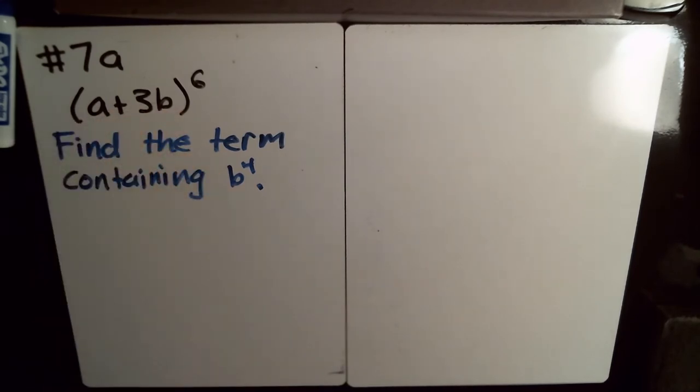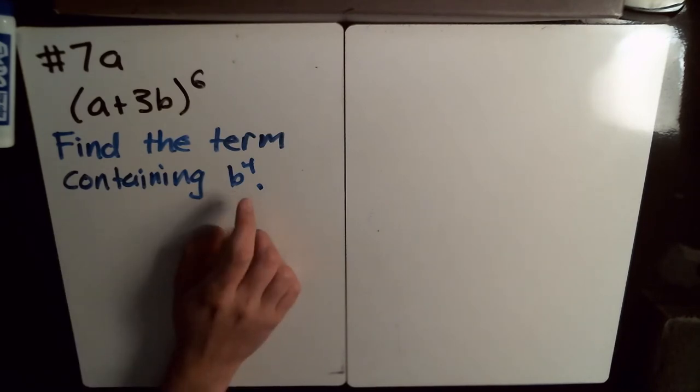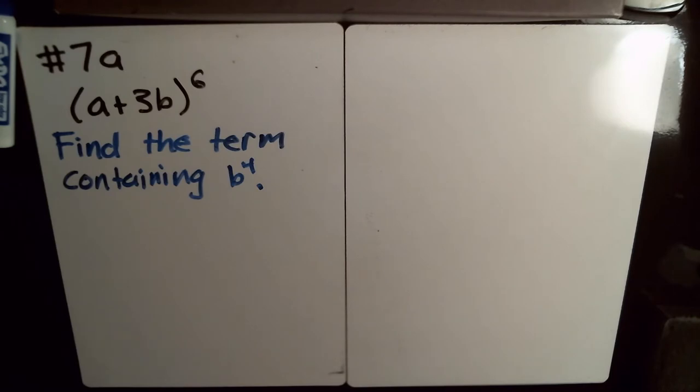So once we distribute this all out, we wonder what's the stuff going to be around b to the 4th, what things are going to be multiplying with it. This is where the binomial theorem comes in real handy because we don't need to expand this whole thing to figure out one particular term.